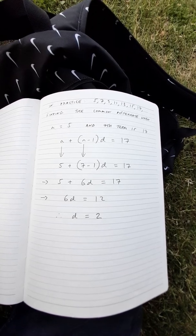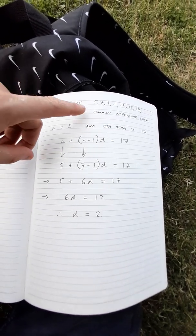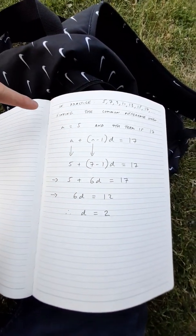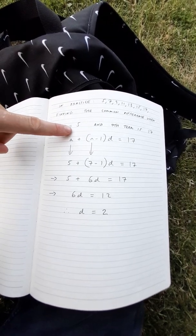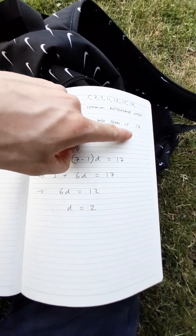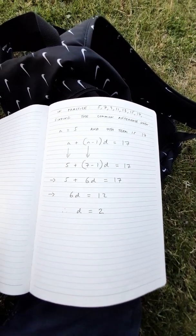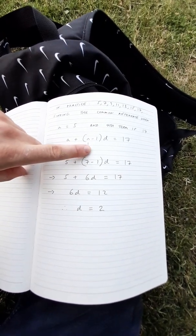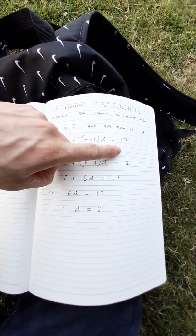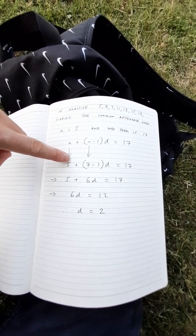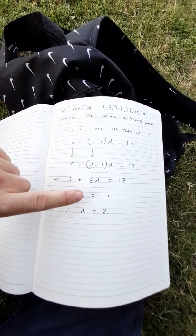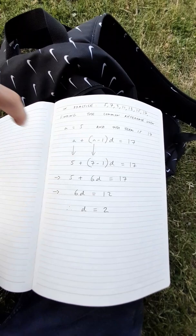Now how about finding the common difference? We have the same sequence and a is equal to 5 and the seventh term is 17. Well we get this expression, turn it into 17, and change a into 5 and n into 7.